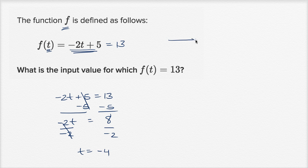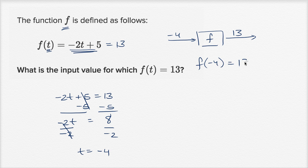So you input negative four into this function, and it will output 13. Or we could write that f of negative four is equal to 13. But this is what they're looking for. This is the input value. Negative four is the input value for which f of t is equal to 13.